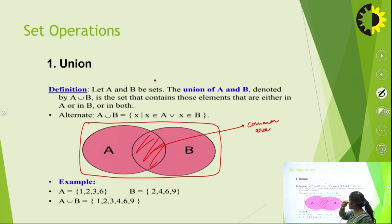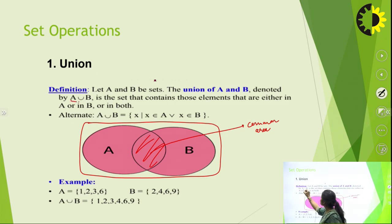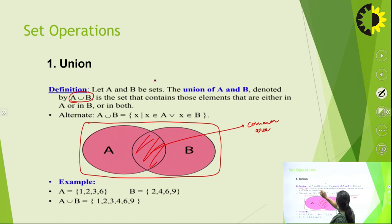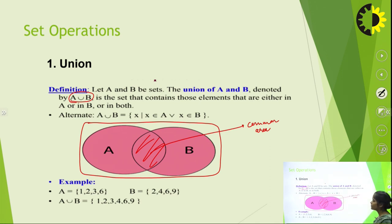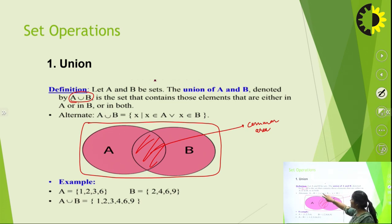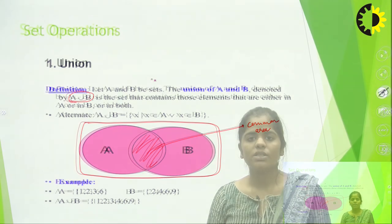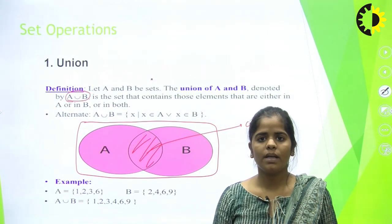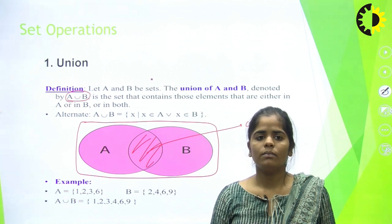The union operation is the first set operation. If we have two sets A and B, the union A ∪ B is represented by this sign. A ∪ B is the set that contains those elements that are either in A or in B. We will continue with more examples in the next part. Thank you.